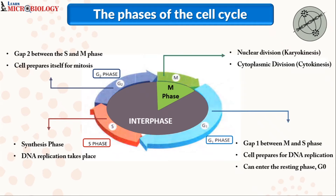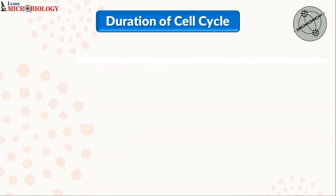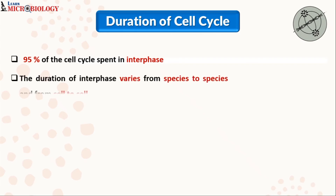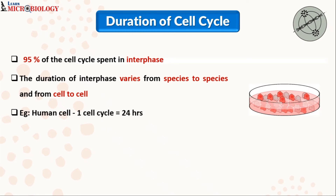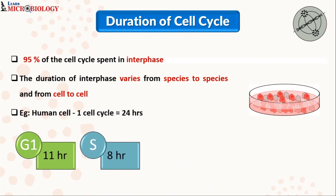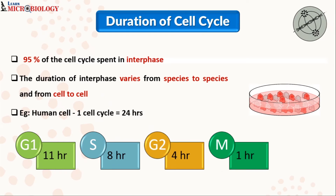95% of the cell cycle is spent in the interphase, i.e., the G1, S, and G2 phases. The duration of the interphase varies from species to species and also from cell to cell. Consider a human cell growing in a nutrient medium in the lab: completing one entire cell cycle usually requires 24 hours — G1 phase requires 11 hours, S phase requires 8 hours, G2 phase requires 4 hours, and the M phase requires just 1 hour.